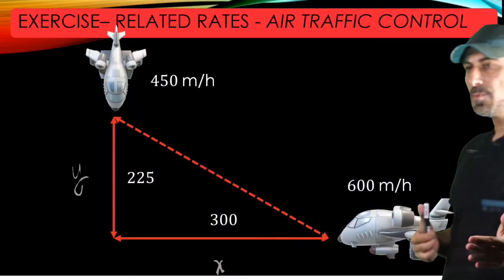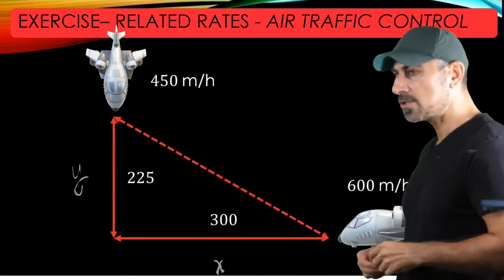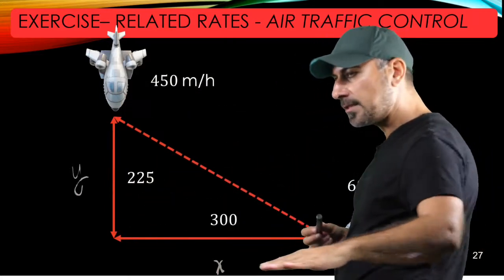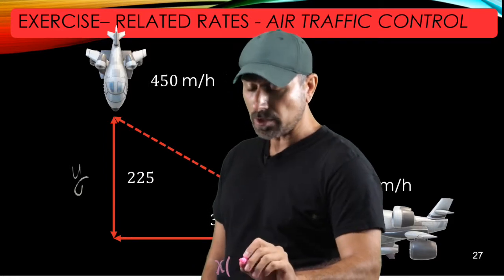This plane moves in X direction and this plane moves south all the way in Y direction. Y is decreasing this way and X is decreasing this way. So both sides of the triangle are functions of time.